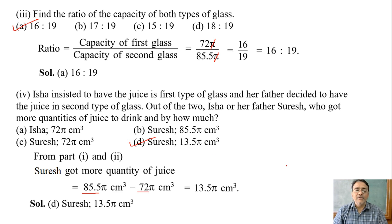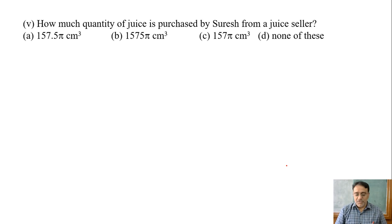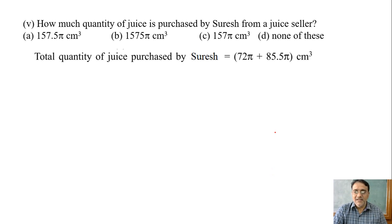Now we will move toward the last question. How much quantity of juice is purchased by Suresh from the juice seller? How will you find it? Adding both the volumes. Very good. We have to add both volumes. That is 72π plus 85.5π.